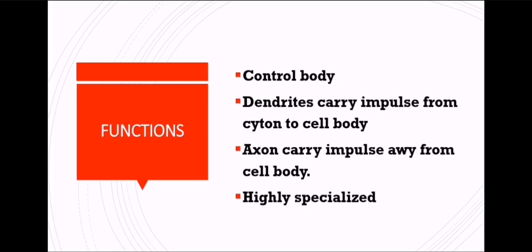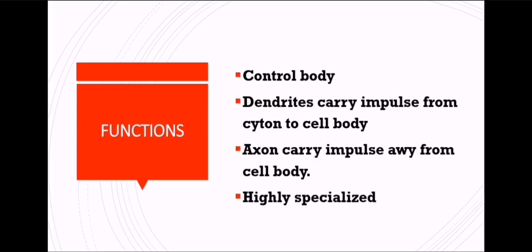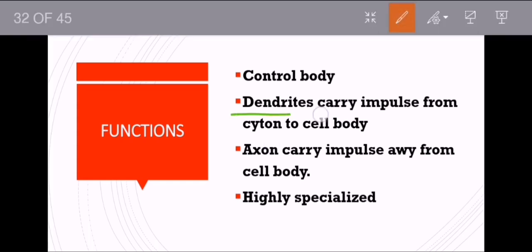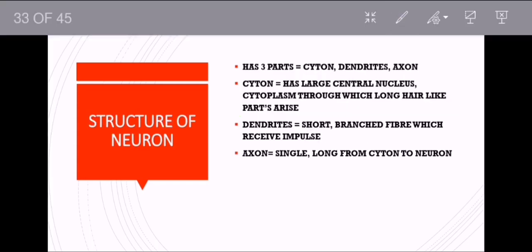The functions of nervous tissue: it is going to control the body. Dendrites carry impulses toward the cell body; axons carry impulses away from the cell body. They are highly specialized to transport the stimulus. Nervous tissue is important for stimulation. Now, dendrites and axon are all present in a neuron. The structure of a neuron — also called a nerve fiber — has three parts: cyton (also called cell body), dendrites, and axon.